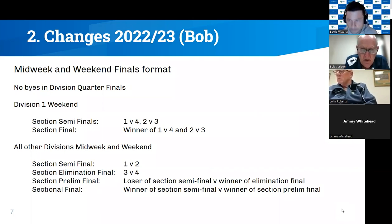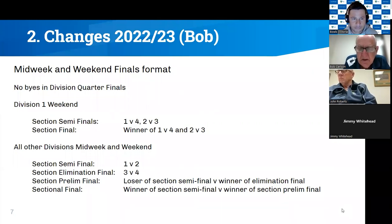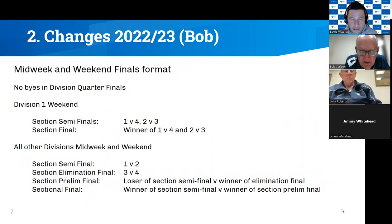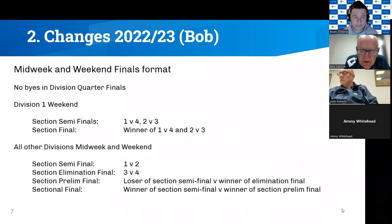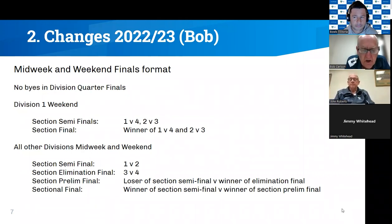This is a significant change. The winner of One versus Two progresses straight to the final, and the loser plays the winner of Three versus Four in a preliminary final. Previously in those divisions, it was a straight knockout — One versus Four and Two versus Three, with winners only progressing. The intent is to reward teams that finish at the top of the ladder, giving the top two sides a second chance rather than being knocked out by a lower-placed team in the first week of finals.